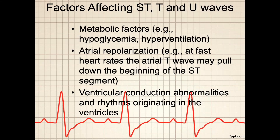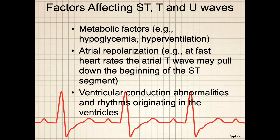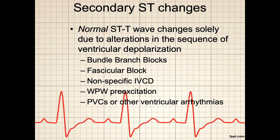Further, certain metabolic factors such as hypoglycemia and hyperventilation can affect these waves, as can atrial repolarization — in other words, fast atrial waves may actually pull the ST segment out of alignment when you look at the rhythm strip, but it really isn't; it's just an artifact from the rhythm. Also, ventricular conduction abnormalities and rhythms originating in the ventricles can also cause what looks like ST segment changes, but these are associated with other cardiac conditions.